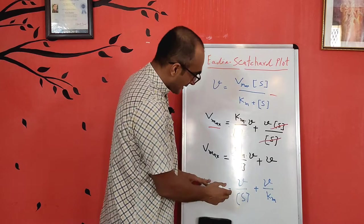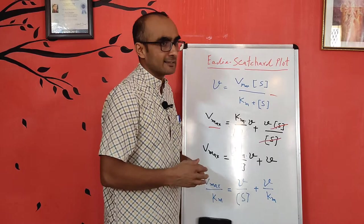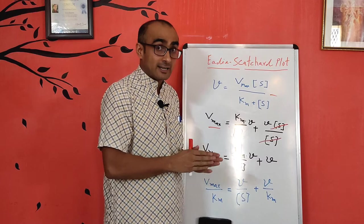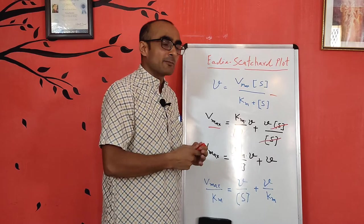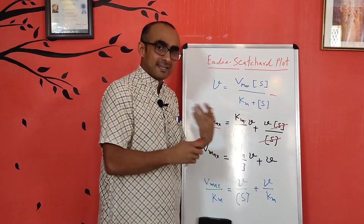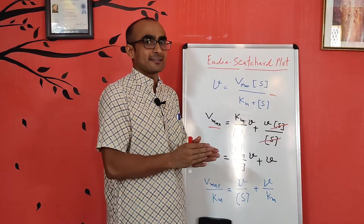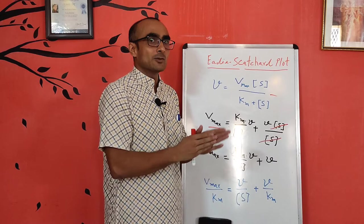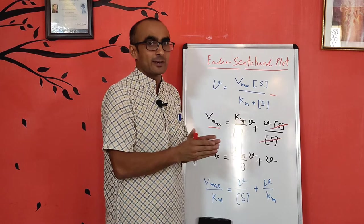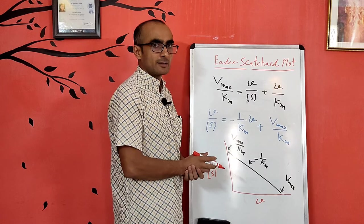We rearrange the equation because in an enzyme-catalyzed reaction, we have a fixed concentration of enzyme, we vary substrate concentration, and simultaneously measure the rate of reaction. So the variables available to plot are rate of reaction (v) and substrate concentration (S), or derived quantities like v/S. We need to arrange the equation so that only v, S, or similar terms like v/S appear.